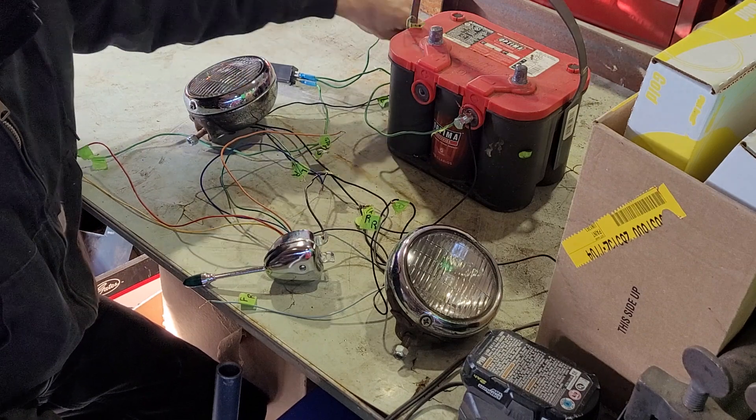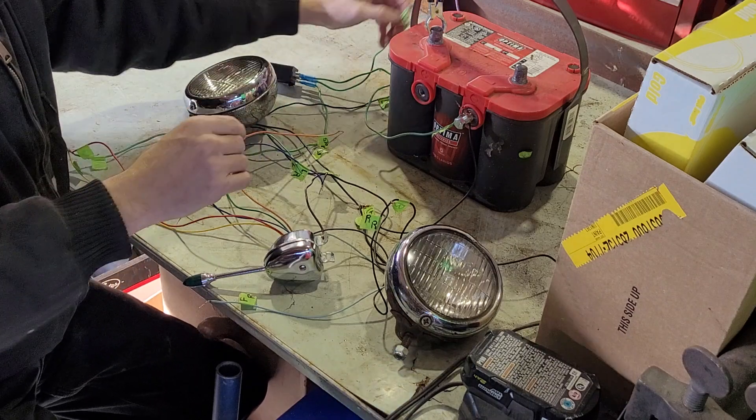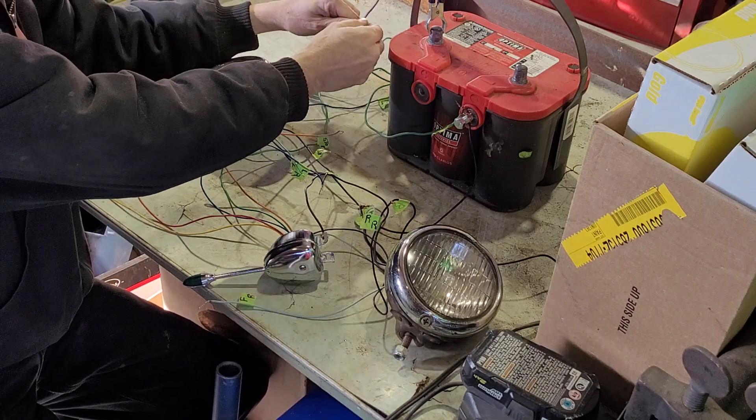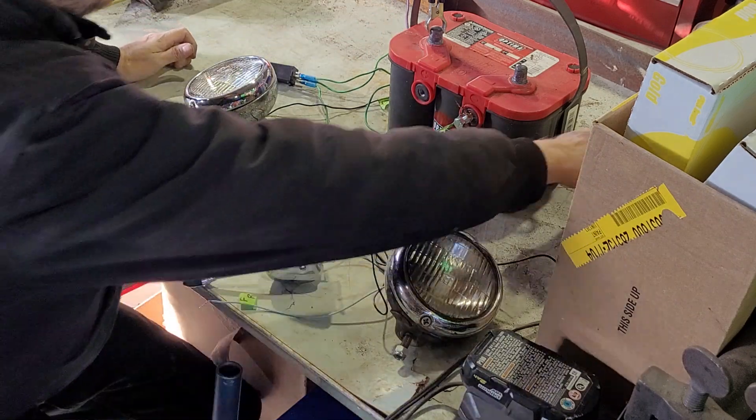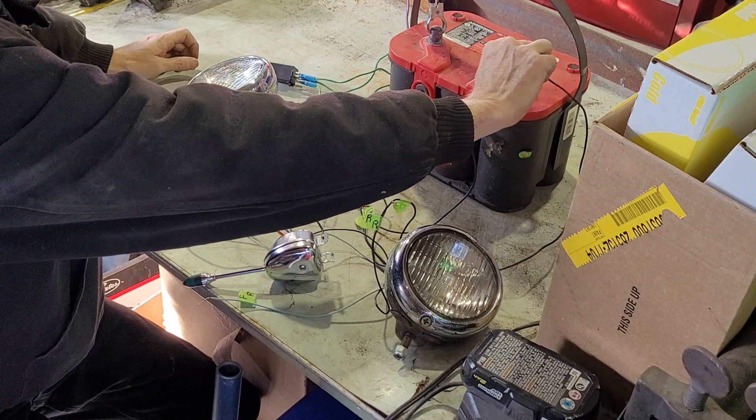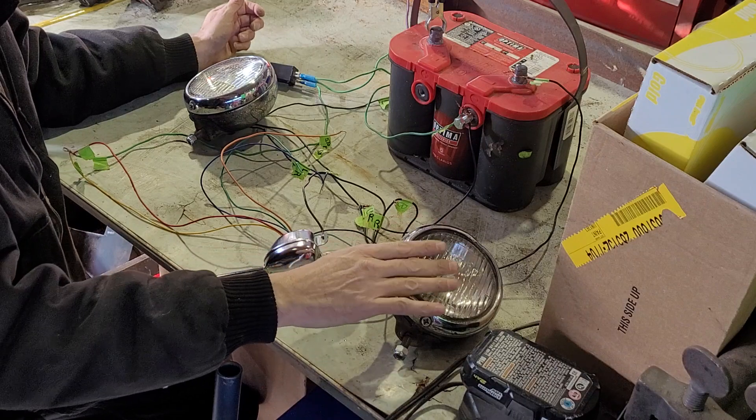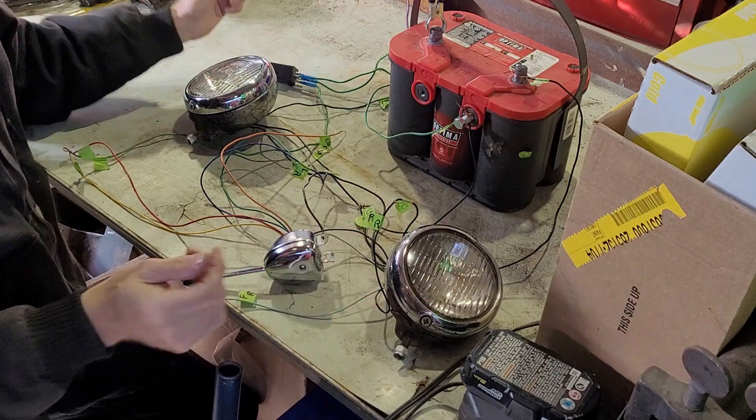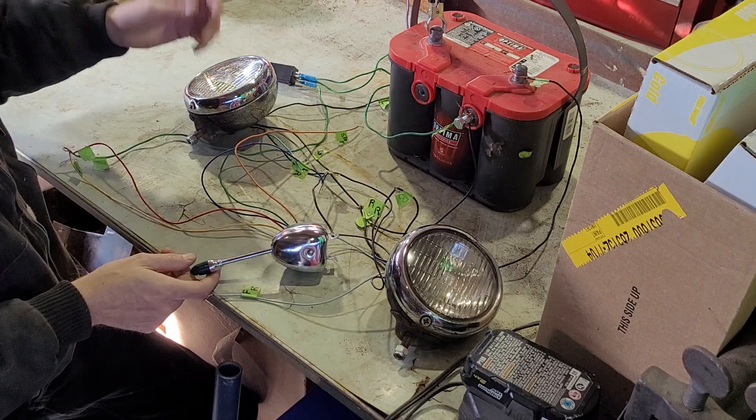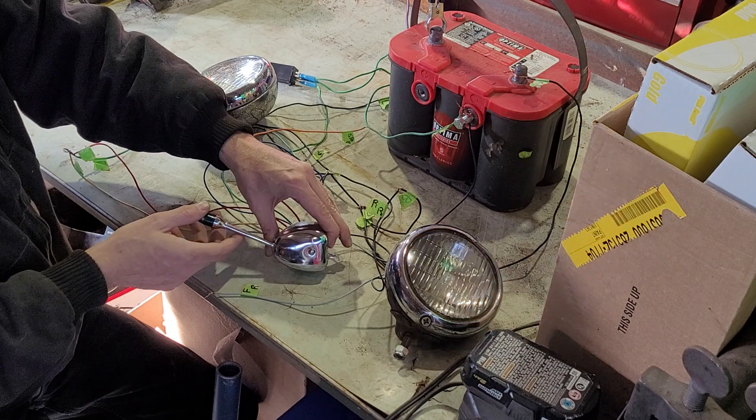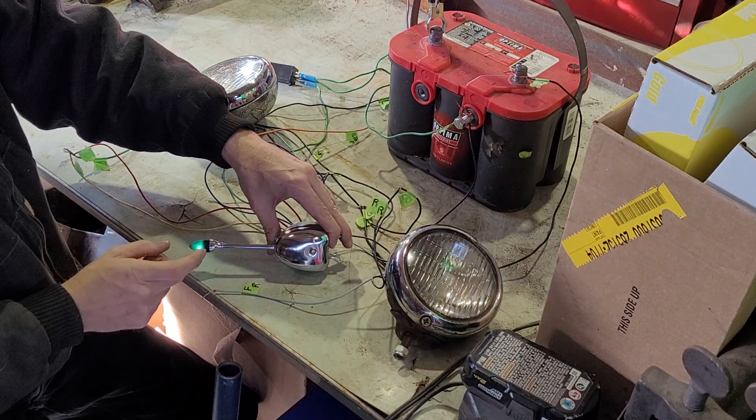Then you got to make sure your actual lights are grounded as well because they just have a positive and a ground. Then you got your right side and your left side blinker. This thing isn't working properly so we're just gonna keep the yellow one disconnected.